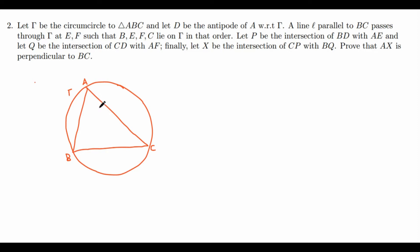So in this case, if you want D to be the antipode of A with respect to gamma, you take A and find the point diametrically opposite. So if you follow along here, this would be D.